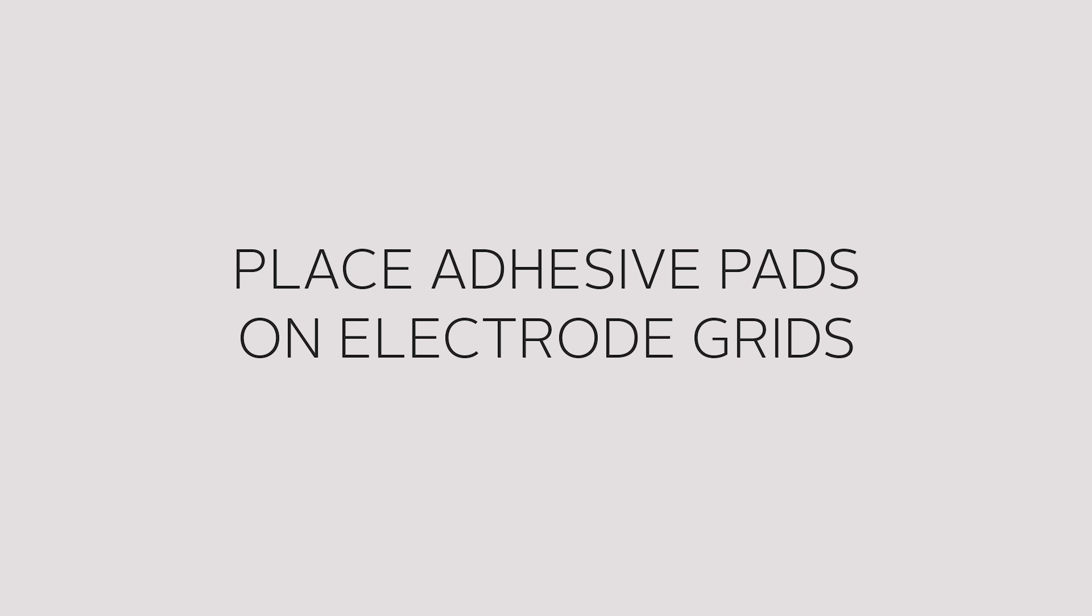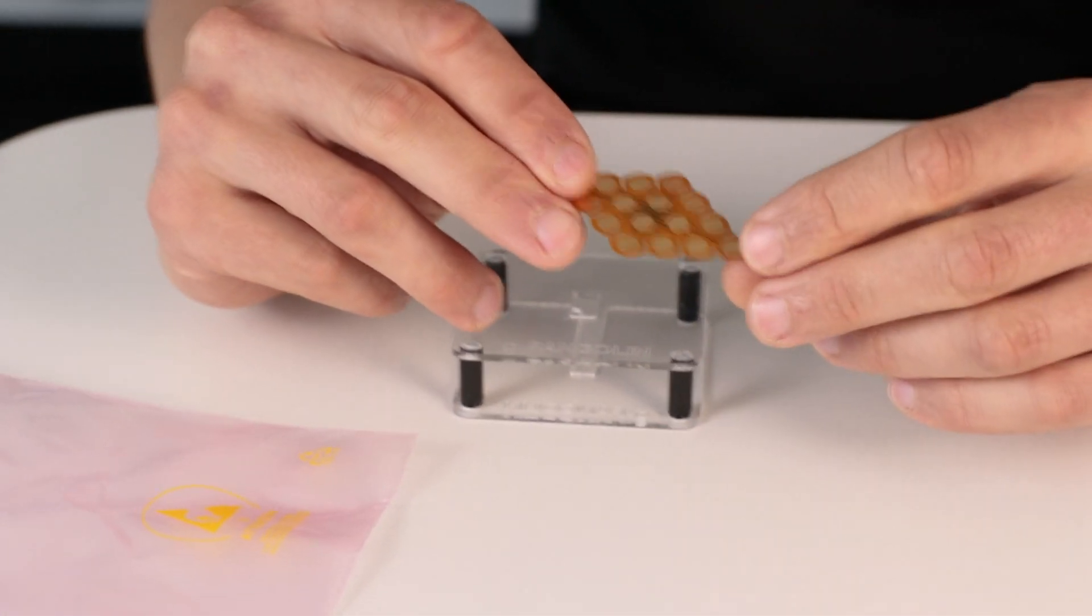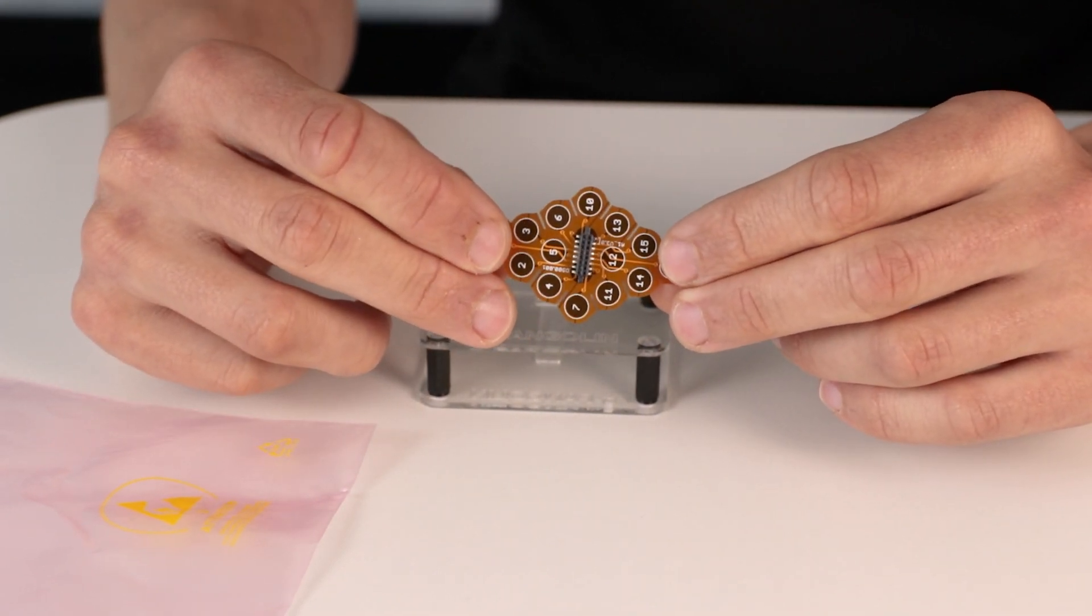So the first thing you do is take out the grid, the new 16 channel Pangolin EEG grid. So here you can see the gold plated electrode dots and here the connector from the grids.